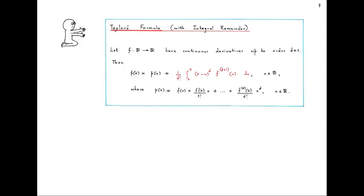Without further ado, here is the statement of Taylor's formula with integral remainder. So far we have been assuming that f is infinitely many times differentiable, but now suppose that f has derivatives up to order d+1 and all of these are continuous. From this f we can construct its degree-d Taylor polynomial in the same manner as previously seen. Then Taylor's formula says that the error f(x) minus p(x) is given by the expression: 1/d! times the integral from 0 to x of (x minus u)^d times the (d+1)th derivative of f, with integration variable u. The error is expressed in terms of an integral involving the (d+1)th derivative of f.